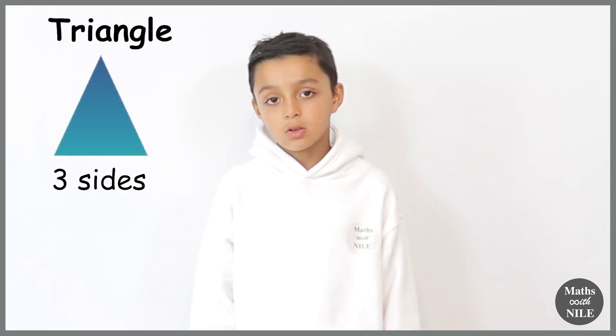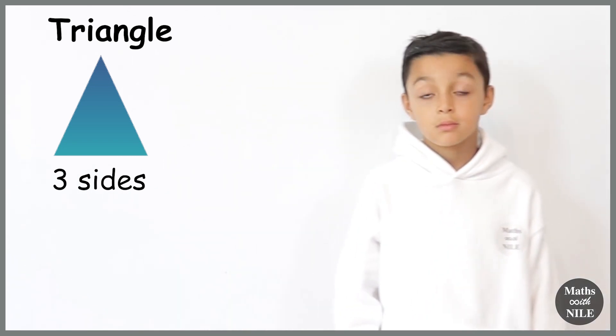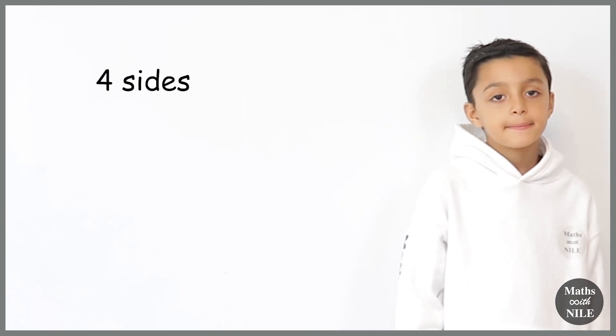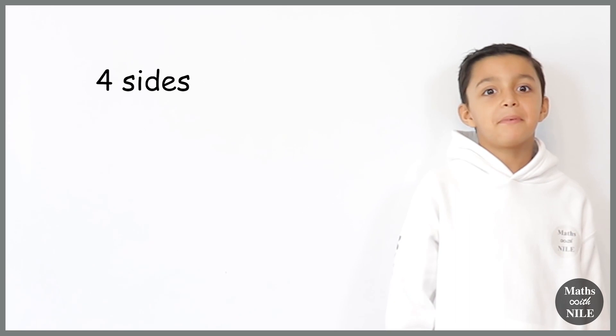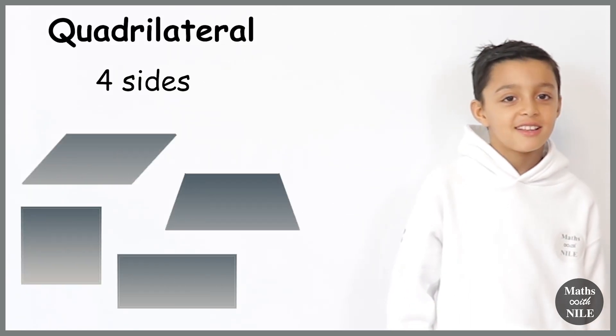Let's start by naming the shapes. Can you tell us what is a shape that has three sides? Triangle. A triangle. Okay, what about a shape that has four sides? Quadrilateral.